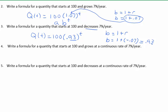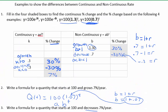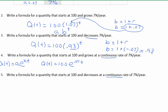The next two examples are the same as 2 and 3, but I added the word continuous. Since it's continuous, I'll use the formula where quantity equals some initial value times e raised to kt, where k is the continuous growth rate or decay as a decimal and t is time. My a value is 100. To grow 7% continuously, I convert to a decimal: k equals 0.07. In the continuous model, positive k means growth.